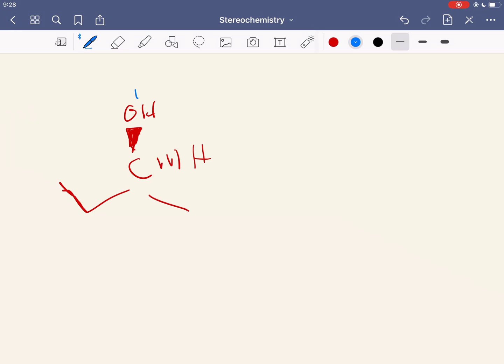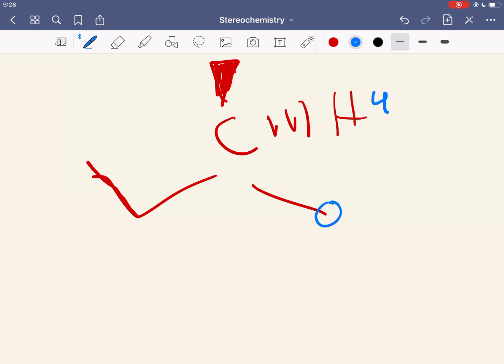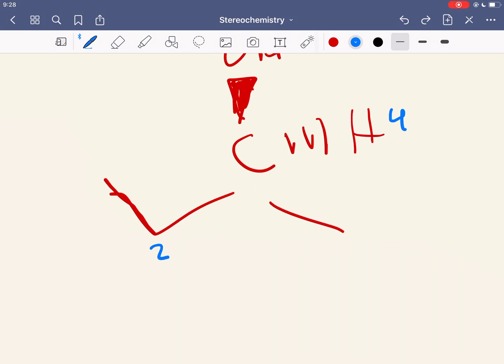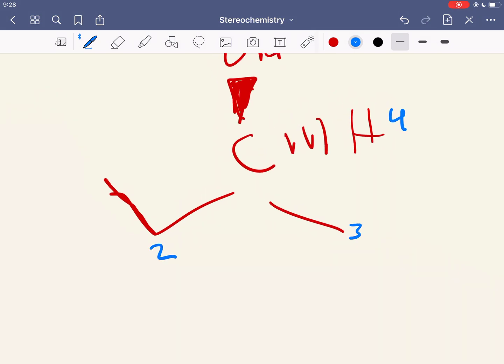So my highest priority is the oxygen, my lowest is the hydrogen, and then down here I have two carbons. So those are the same priority, but when we have a tie like that, we just look at the next neighbor. This methyl group is attached to three hydrogens, whereas the ethyl group is attached to one carbon and two hydrogens. So the carbon wins, it's higher priority. So this guy is second priority, and then this is third.